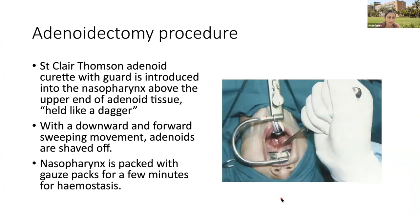The adenoidectomy procedure is commonly performed using the St. Clair Thomson adenoid curette. It is a curette with a guard introduced into the nasopharynx above the upper end of the adenoid tissue, held like a dagger. The upper end is placed above the upper limit of the adenoid, then scraped off the nasopharynx with a downward and forward sweeping movement. The nasopharynx is then packed with gauze pieces for a few minutes to attain hemostasis.